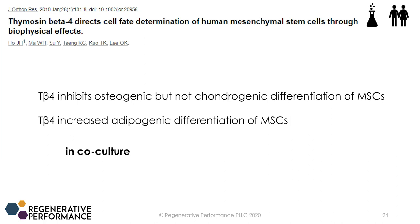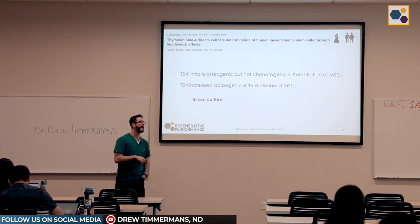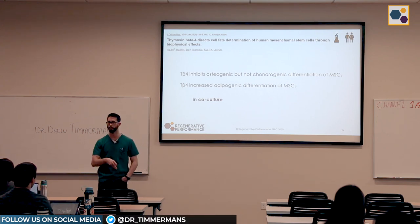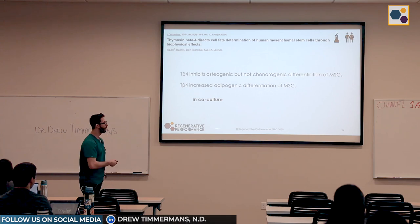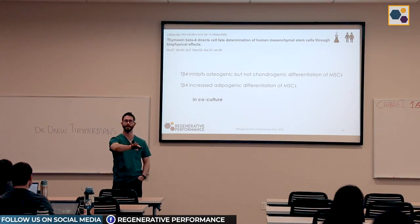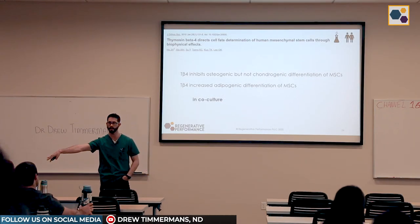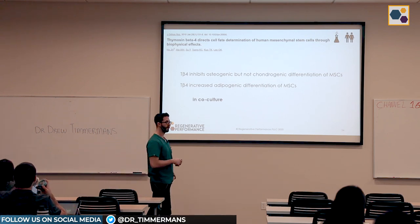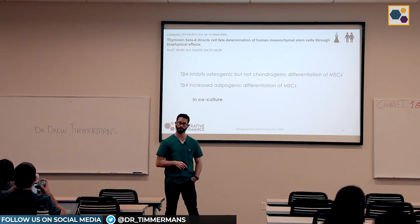This was an interesting study. They took human mesenchymal stem cells — bone marrow derived — put them in a petri dish, and added TB4 to see what would happen. What they saw was that TB4 inhibited the osteogenic differentiation of the stem cells, did not change the chondrogenic pathway, and actually increased the adipogenic differentiation of MSCs.